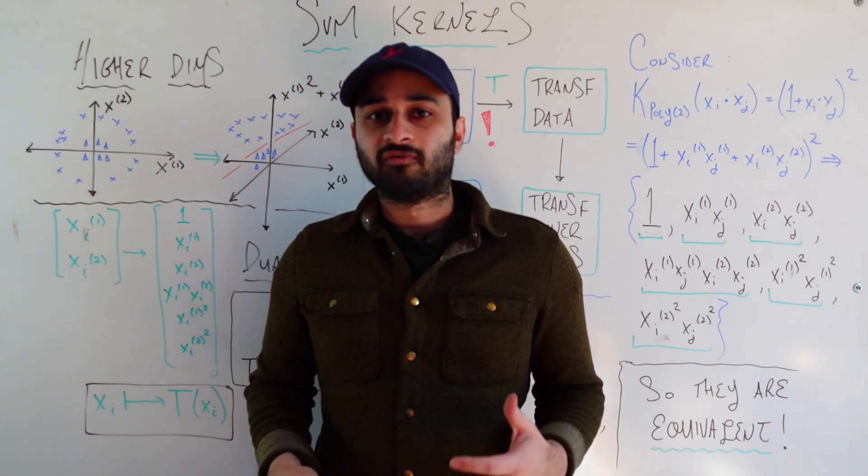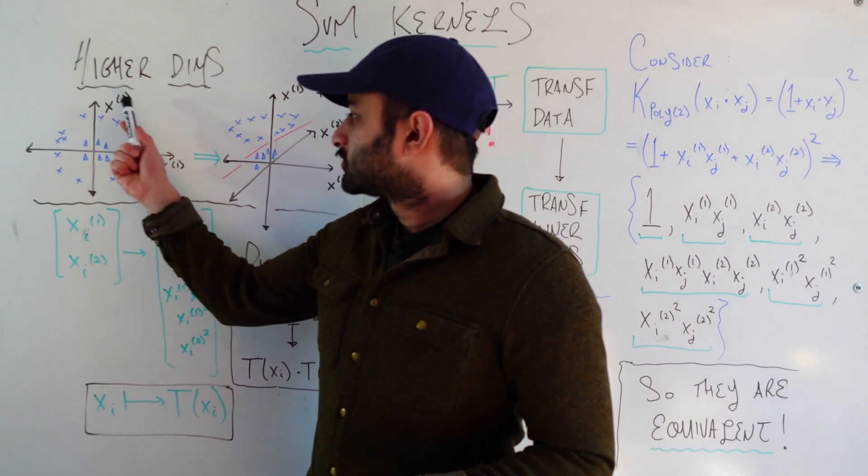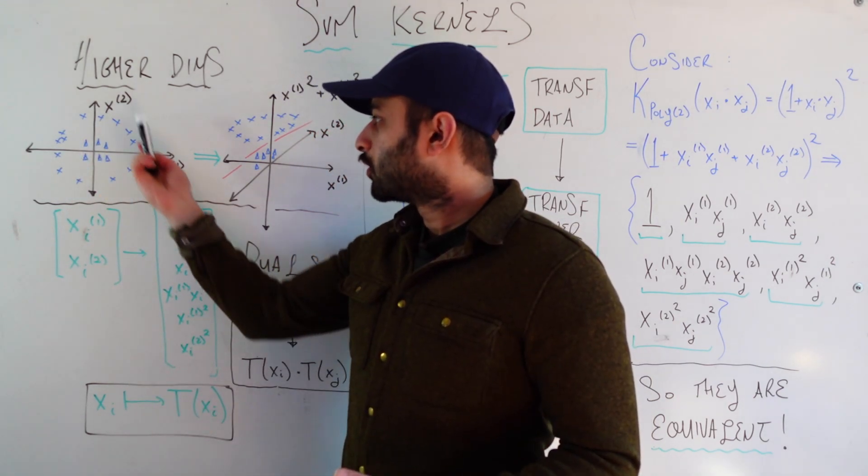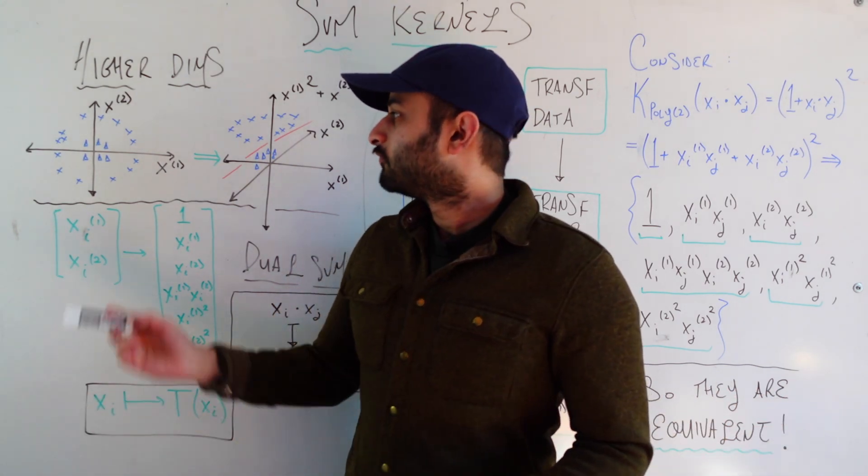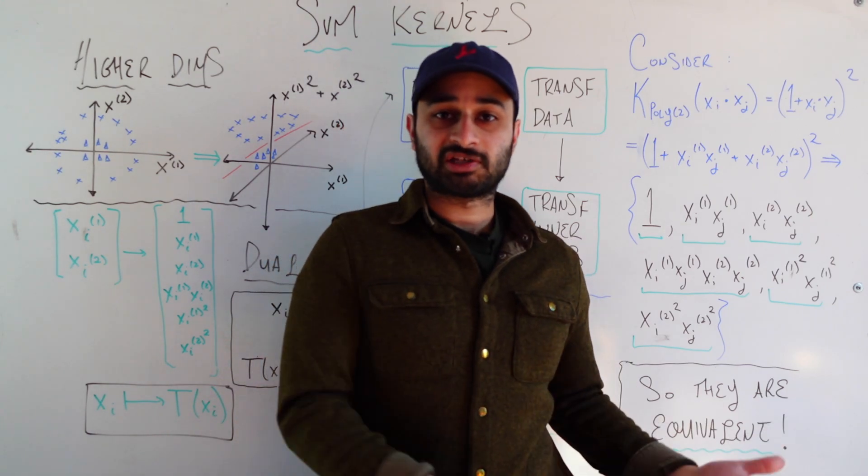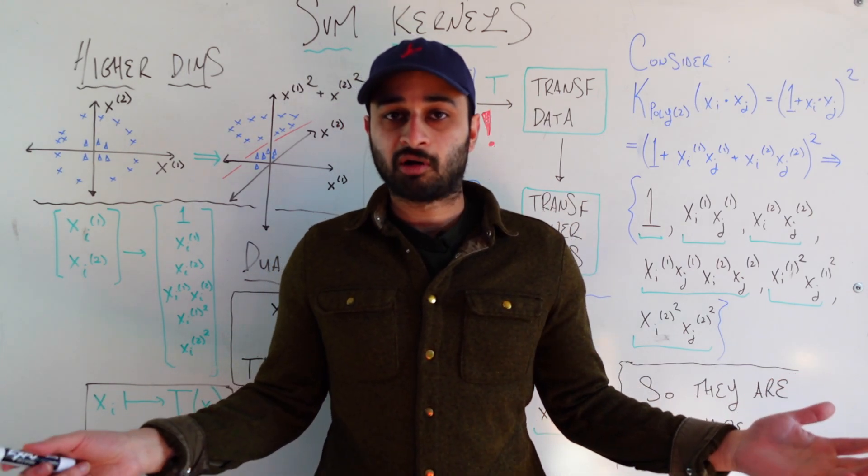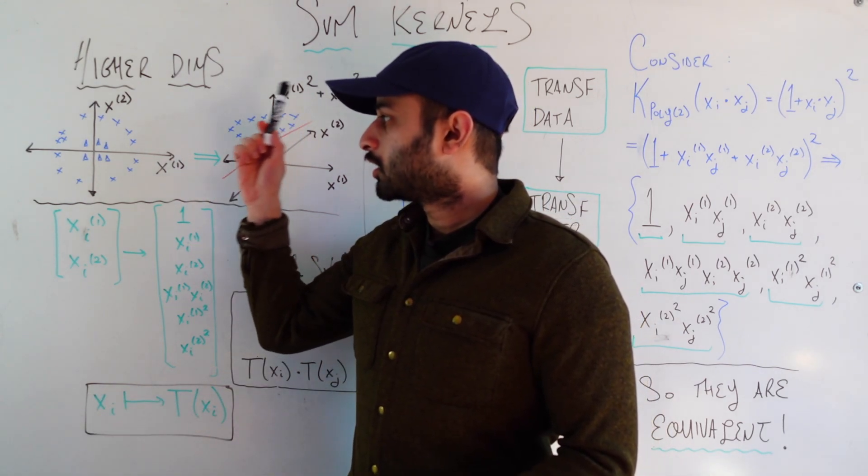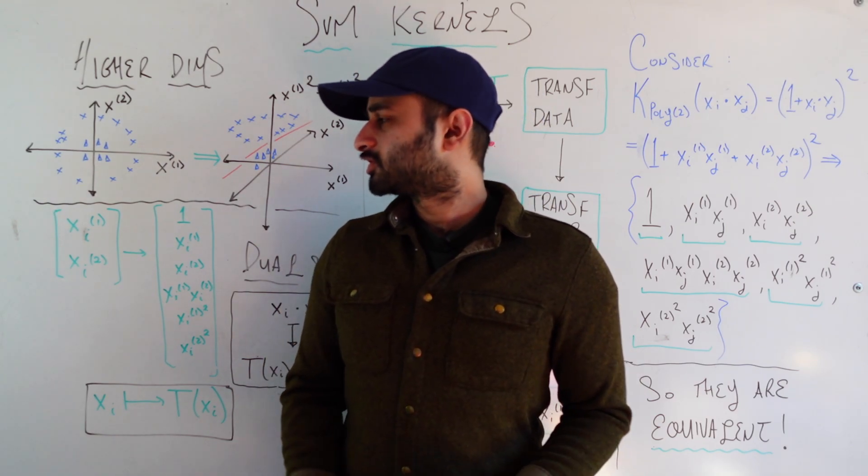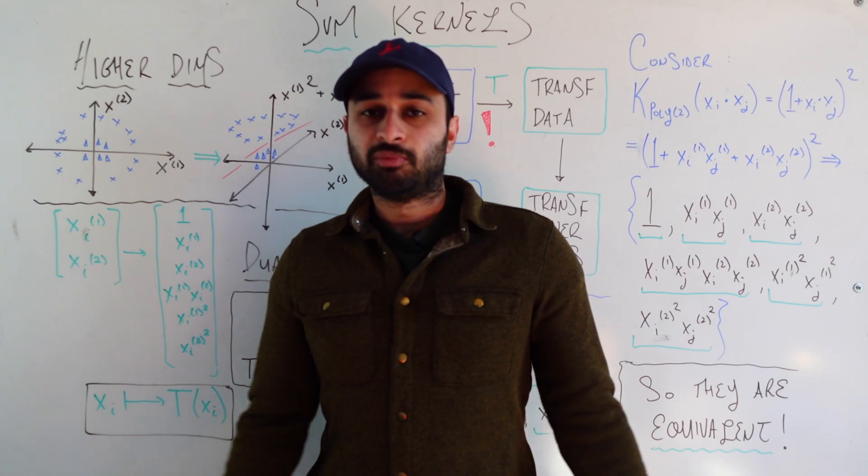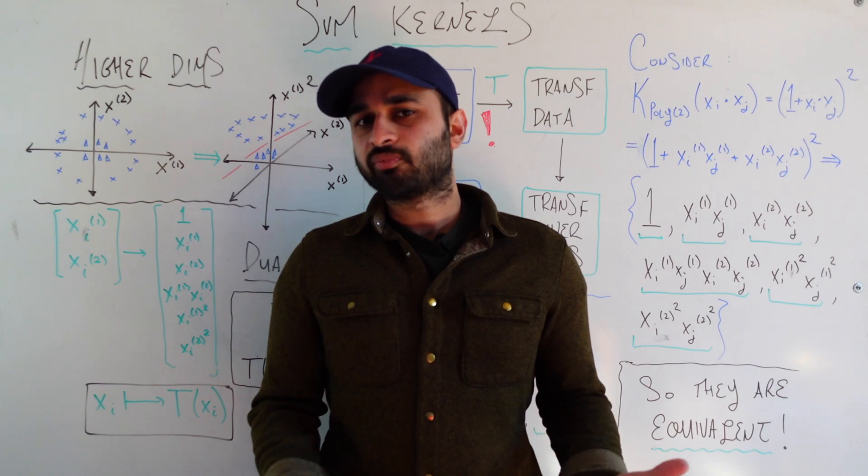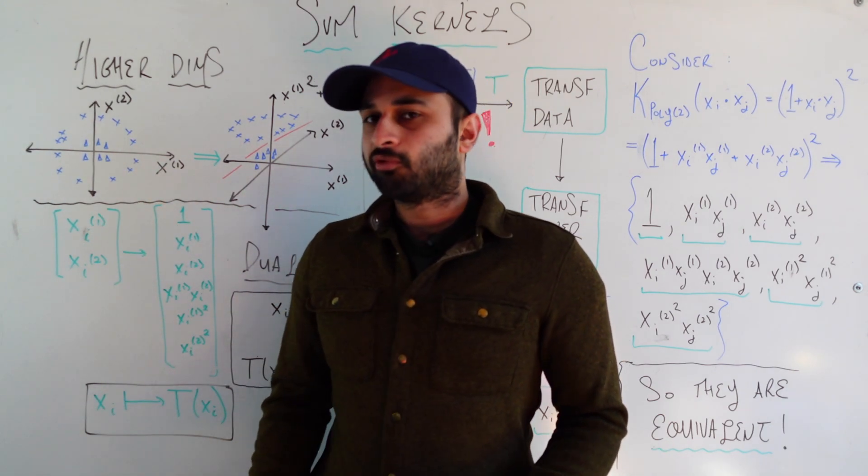Let's start with a motivating example. We have this very simple 2D case of two classes of data - triangles with relatively low coordinates for x1 and x2, and the x's which have relatively higher values. The question is, can we make a SVM classifier using hard SVM? Can we draw a line that's going to perfectly separate the two classes? The answer is no, even though it seems like there's such a natural way to separate the classes.